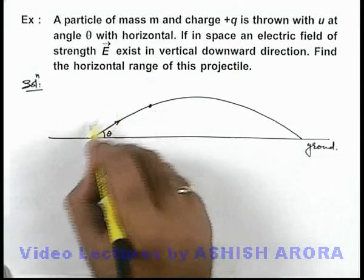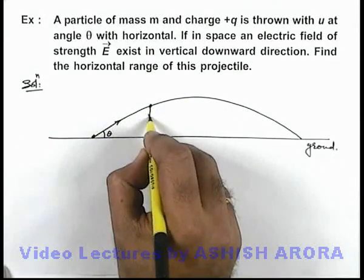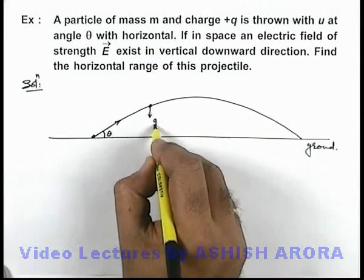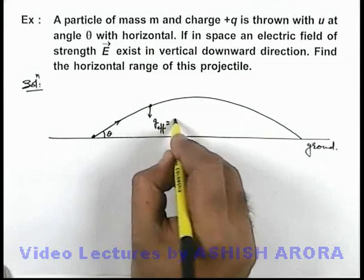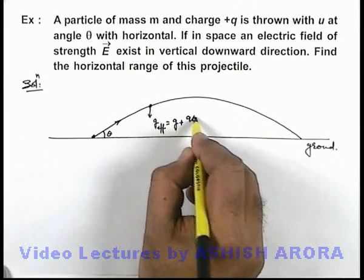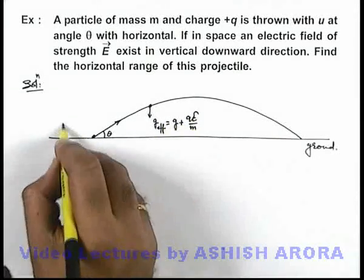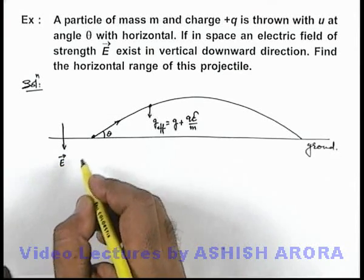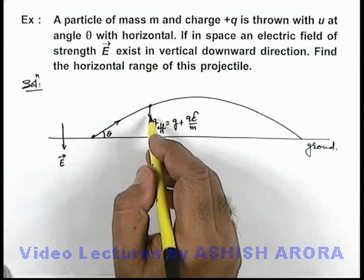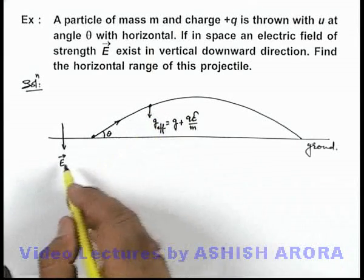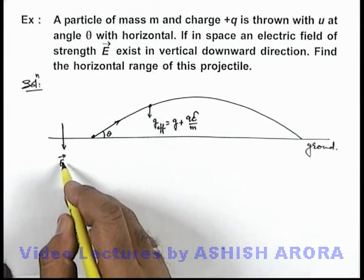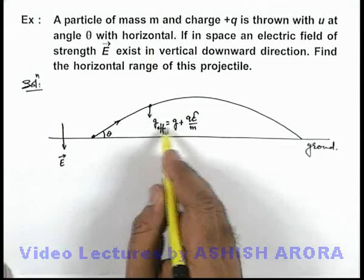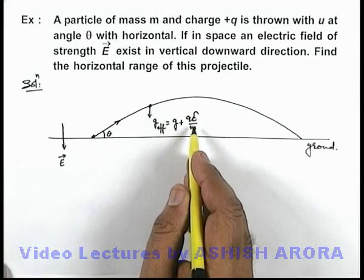In this situation during its flight, it will experience a downward effective gravity g_effective which is equal to g plus qE/m, because we are given that in downward direction an electric field E also exists. So net force acting on the particle in downward direction will be its weight plus the electric force qE. So resulting effective gravity can be taken as g plus qE/m.